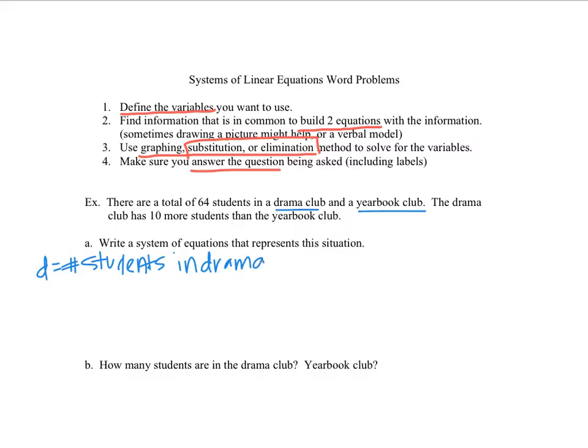And I'll make Y the number of students in yearbook. So that way, when I see the D and the Y, I'll know what they stand for without having to look back at the story. So it tells me that there are a total of 64 students. So the number of students in drama plus the number of students in yearbook is 64. So that's my first sentence. Now, the other thing that you need to remember is that once you use a number, you can't use it again. So when we write our next equation, we're not allowed to use the number 64.